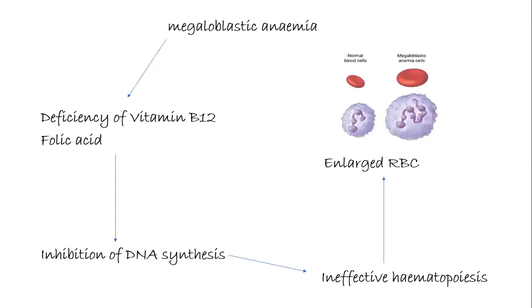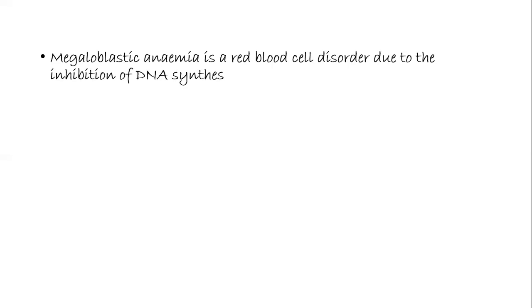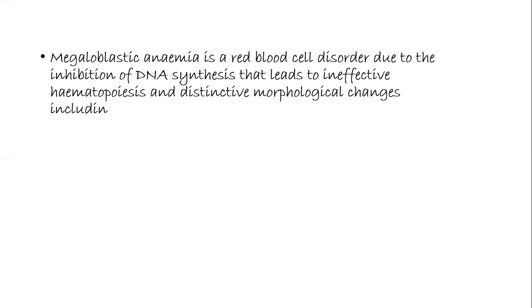Ineffective hematopoiesis leads to enlarged RBCs. If you examine the RBCs of a patient suffering from megaloblastic anemia, you will see that the size of the RBC is enlarged, or the MCV is increased - that is mean corpuscular volume. Megaloblastic anemia can be defined as a red blood cell disorder due to inhibition of DNA synthesis that leads to ineffective hematopoiesis and distinctive morphological changes, including abnormally enlarged erythroid precursors and RBCs.